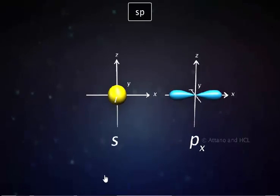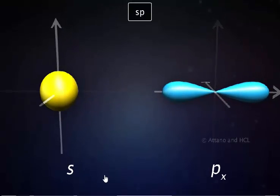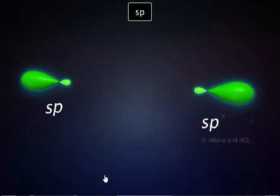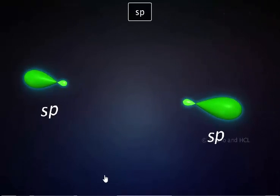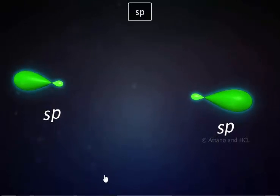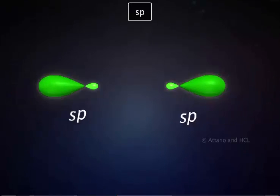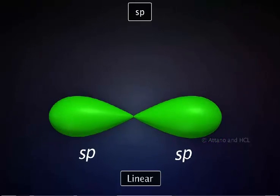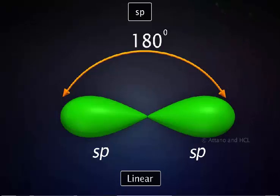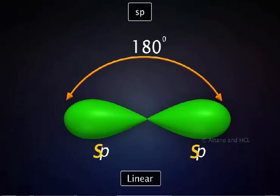The sp type of hybridization involves the mixing of 1s and 1p orbital, resulting in the formation of two equivalent sp hybrid orbitals. Note that the number of hybrid orbitals equals the number of atomic orbitals that have hybridized. The set of two sp hybrid orbitals has a linear geometry. The angle between the orbitals is 180 degrees. Each sp hybrid orbital has 50% s character and 50% p character.